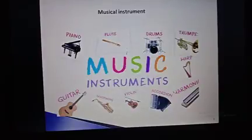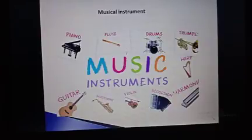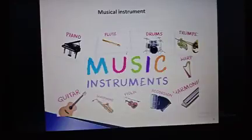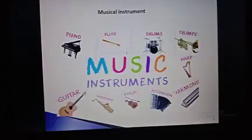So we have to learn only the spellings. From the picture, you can identify which instrument is which — for example, what a piano looks like and what a guitar looks like. From the picture you have to identify the names of the musical instruments. There are so many musical instruments, but we are learning these ones: piano, flute, drums, trumpet, harmonium, violin, guitar, saxophone, etc.